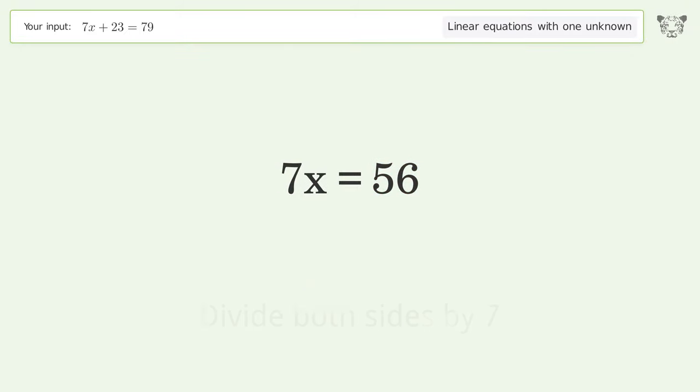Isolate the x. Divide both sides by 7. Simplify the fraction.